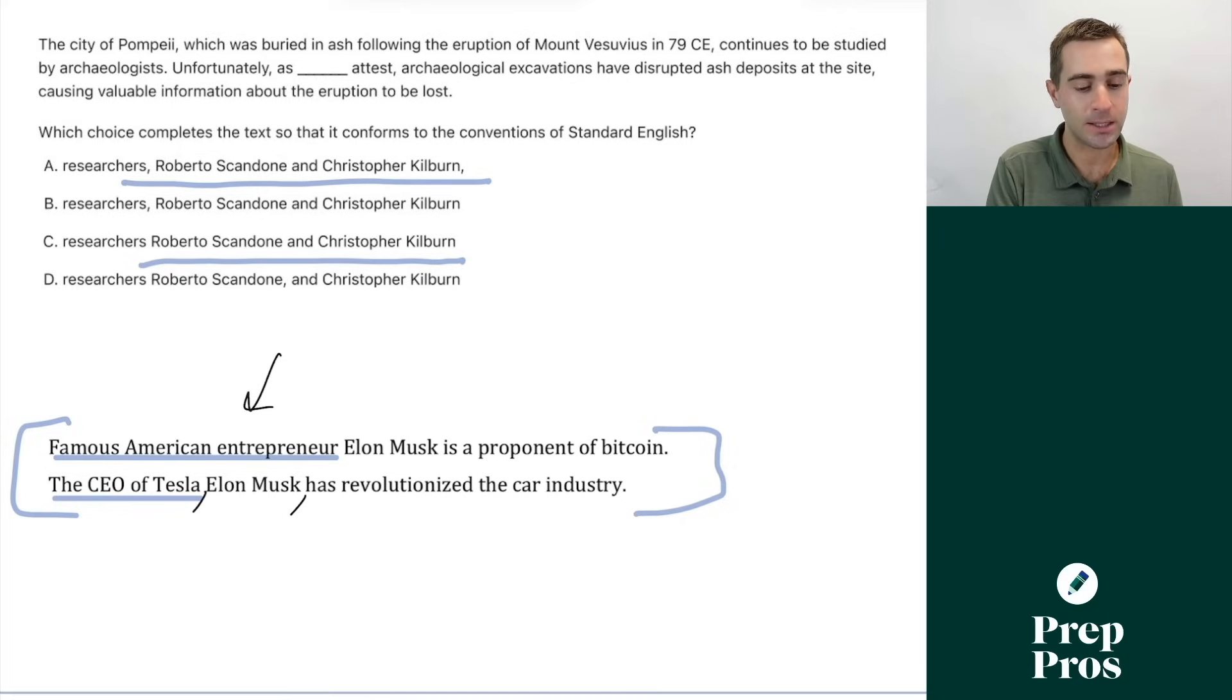As we look at this example, the descriptive element before the name is researchers. Well, that could refer to thousands or hundreds of thousands of different people, and that will tell me I don't want to put commas around the name.